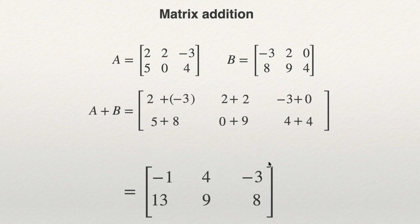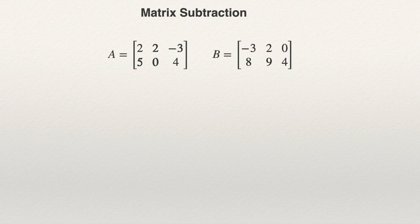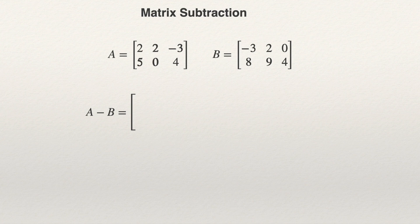This is the result of the addition of matrices — an easy operation. Finally, we have subtraction, which works in the same way. We need two matrices of the same size. Assume we have matrices A and B — the same matrices as before — and we want to find A minus B. A minus B will be another matrix of the same size. You need to subtract the respective entries of the matrices.